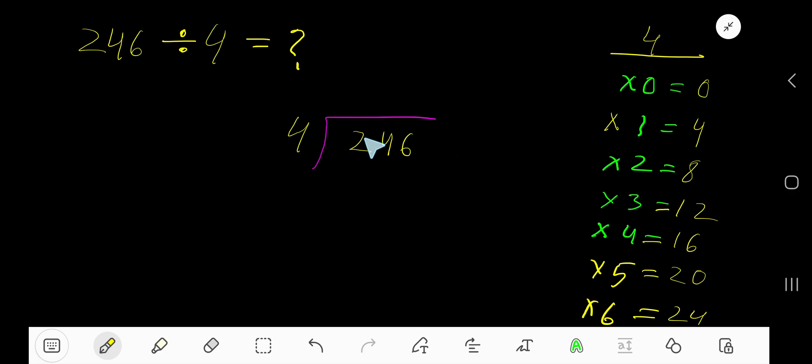Look, 4 goes into 2 how many times? 0 times, as 2 is less than 4. 0 times 4 is 0. Subtract and bring down this 4. 4 goes into 24 how many times? 6 times. Write 6. 6 times 4 is 24. Subtract, you're getting 0.